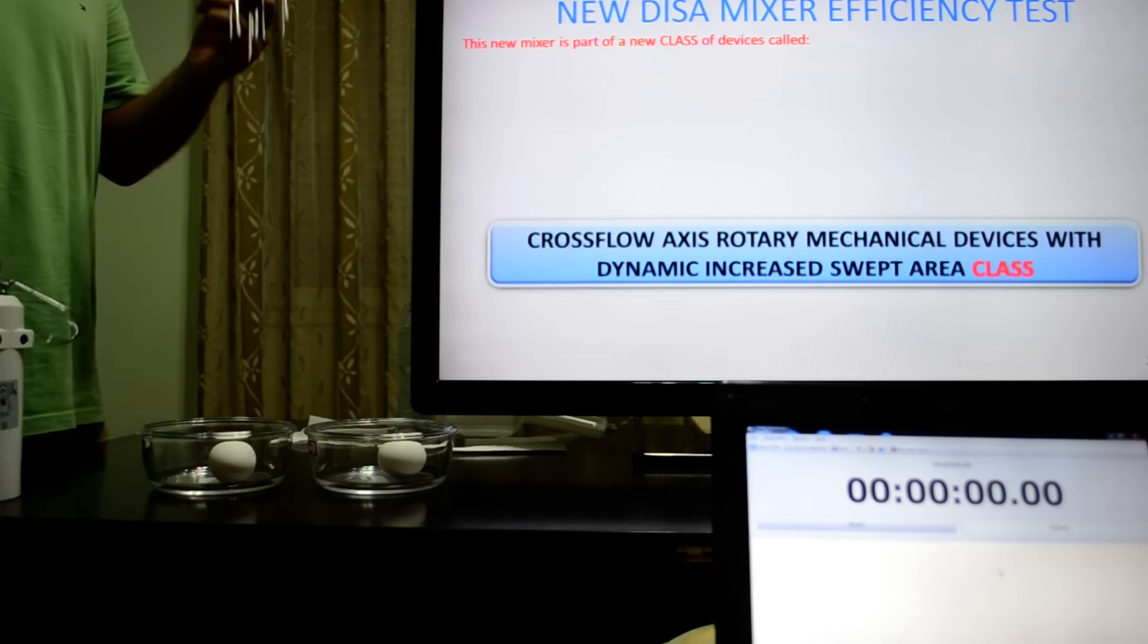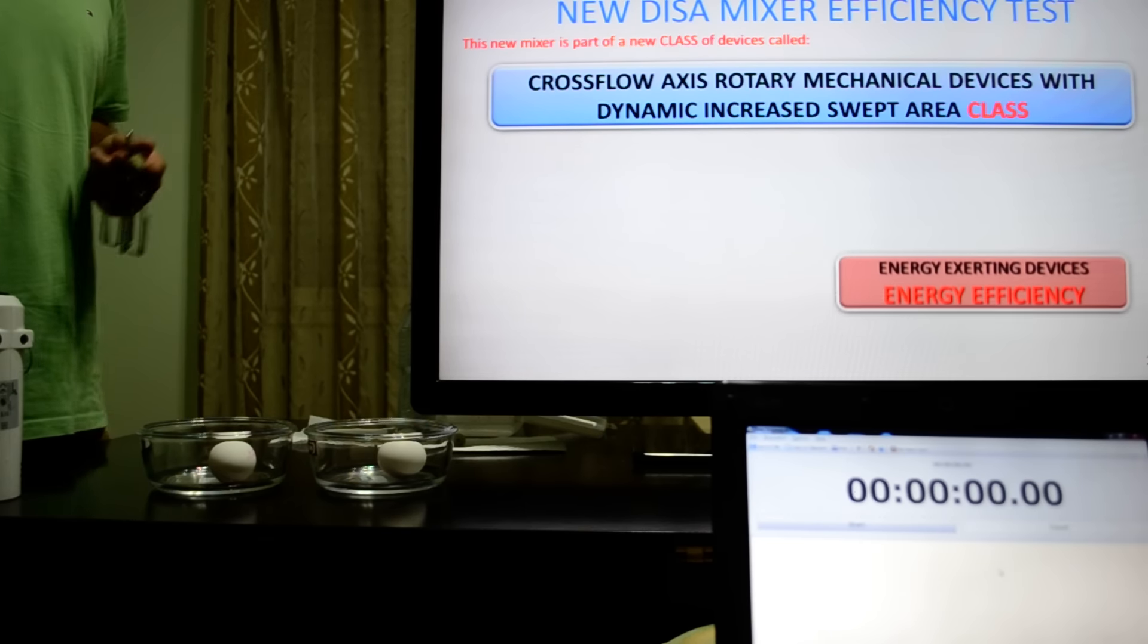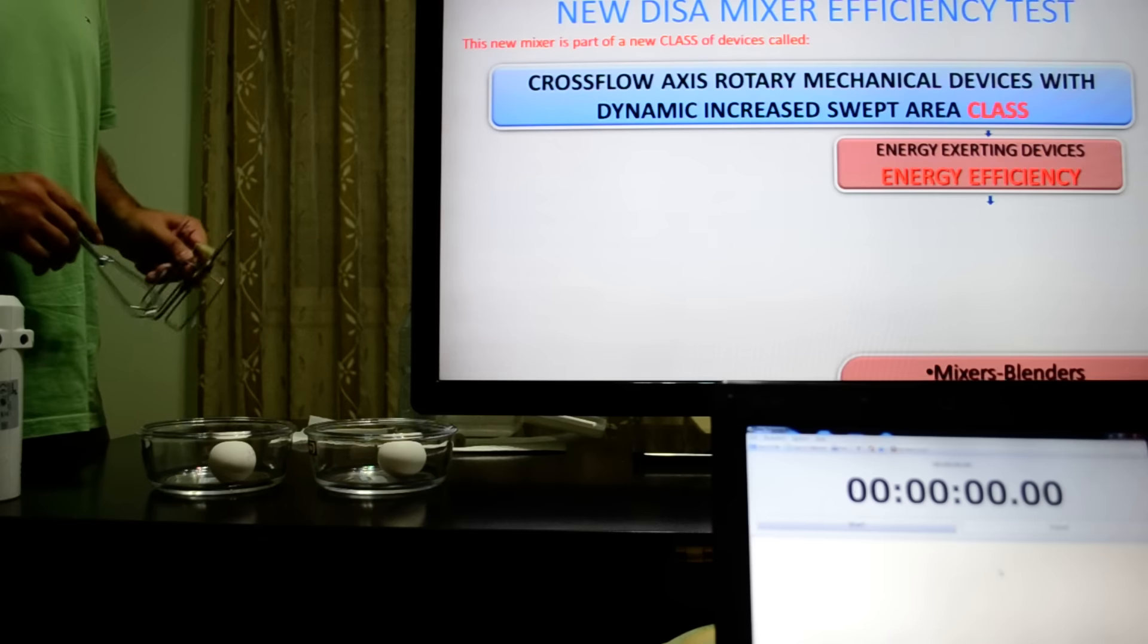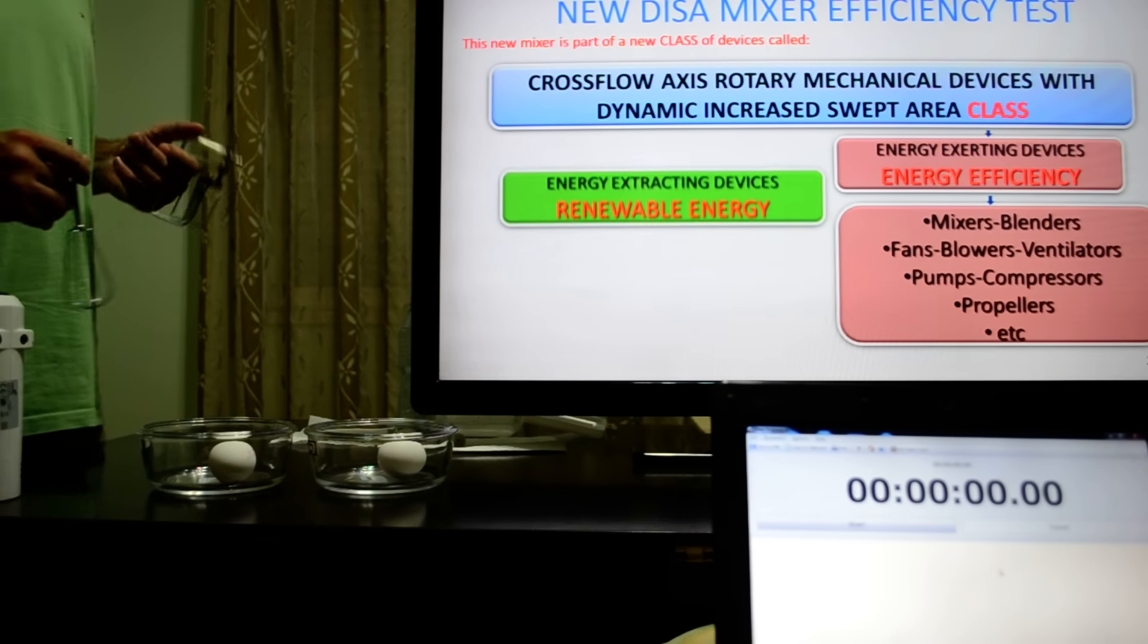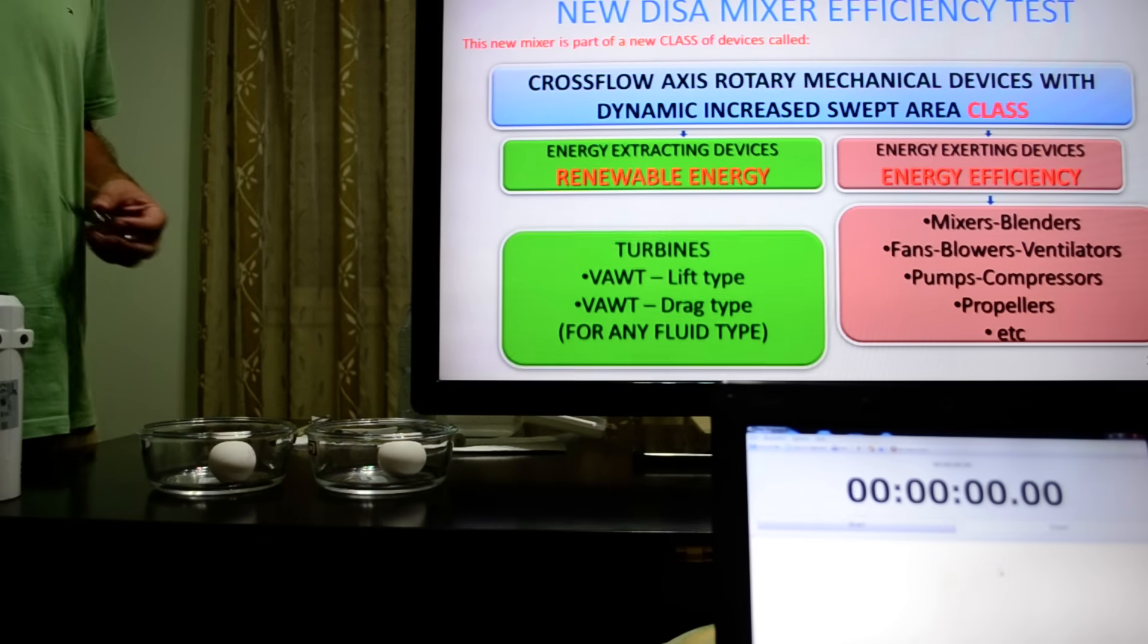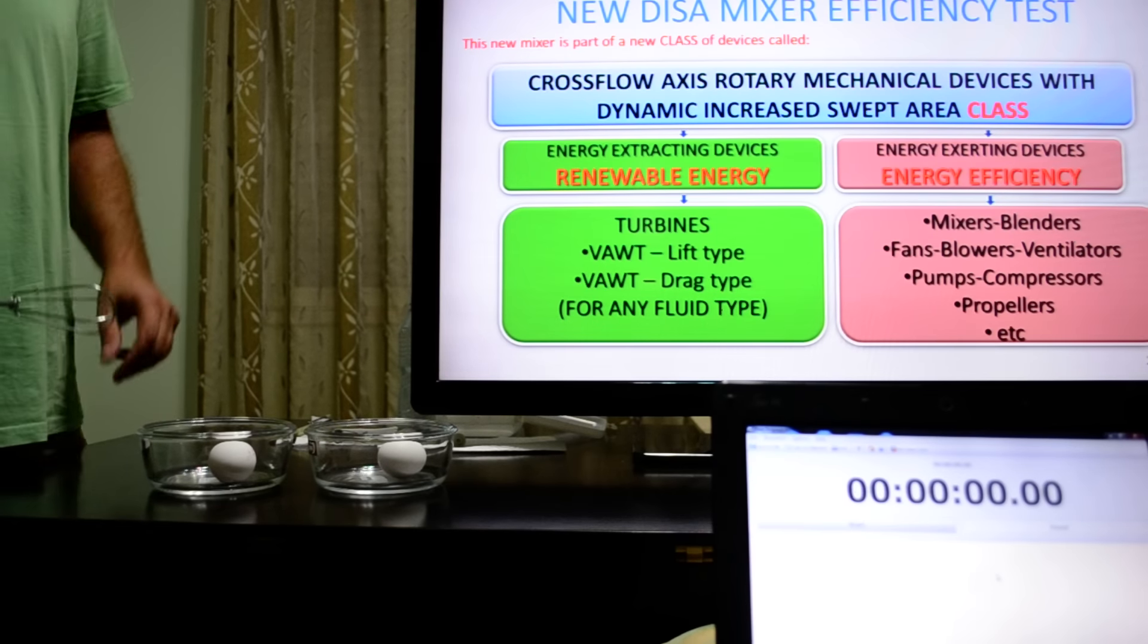This new mixer is part of a new class of device called Cross-Low-Axure Automechanical device with dynamic increased swept area. There are two main groups of this class: the energy exerting device including mixers, fans, blowers, ventilators, pumps, compressors, etc., and the other group, the energy extracting device lying on a renewable energy part, including any type of turbines for any type of fluids.